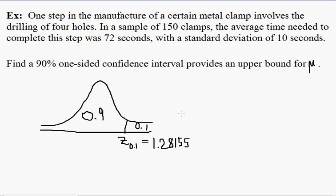And so now we need to find the confidence interval that mu is going to be strictly less than 72 plus some error, and the error will have the same form as the two-sided confidence interval, 1.28155.